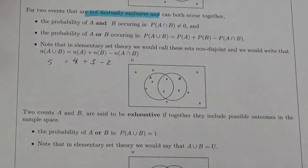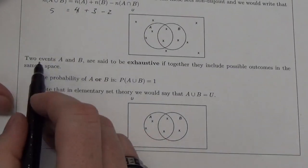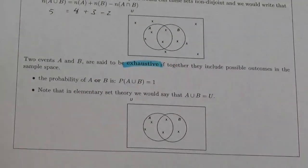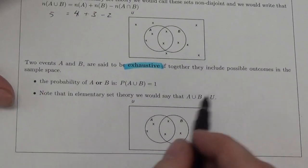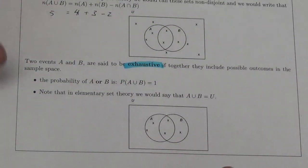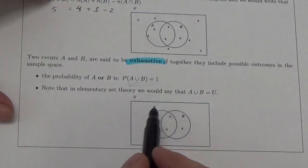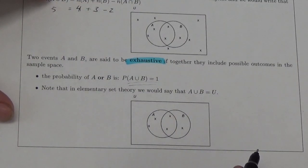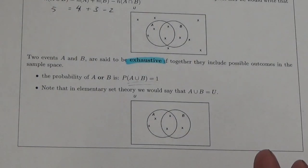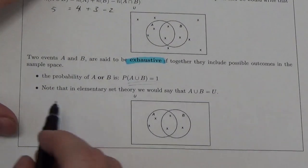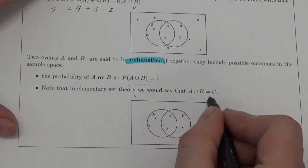Two events are said to be exhaustive if together they include all possible outcomes in the sample space. The probability of A or B equals one — nothing falls outside of events A or B. Going back to the marble example, if the bag only has red and green marbles, those two events cover everything, so A union B equals the universal set.